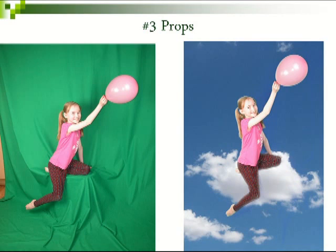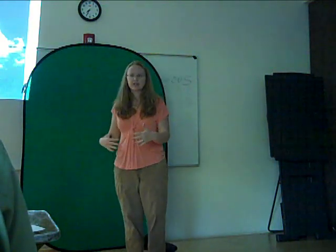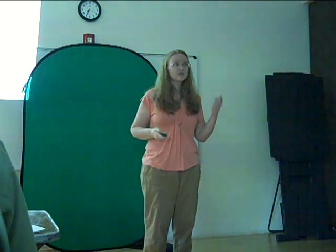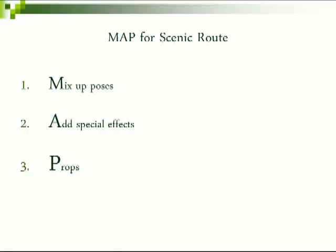And the third part of the map is props. Give your subject a variety of props so that they look like they are involved in whatever their new background is. For here, we gave the girl a balloon, and you can see it helps her look like she was flying in the sky. Costumes are also really important, because then the costume becomes part of the setting and it looks like the person is part of the background, and you can't tell when you're using a green screen. These are the three parts of the map: mix up your poses, add special effects, and use props and costumes liberally.